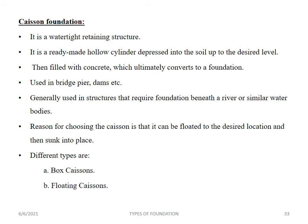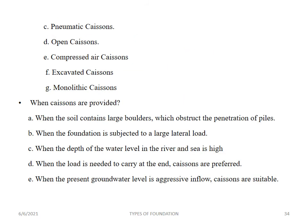Caisson foundation is a watertight retaining structure — a ready-made hollow cylinder pressed into the soil to the desired level and then filled with concrete to convert it to a foundation. It is used in bridges, dams, etc. Caissons can be floated to the required location and sunk into place. Different types are box caissons, floating caissons, pneumatic caissons, open caissons, compressed air caissons, excavated caissons, and monolithic caissons. Caissons are provided when the soil contains large boulders, when foundations are subjected to large lateral loads, when depth of water in a river or sea is high, or when groundwater flow is aggressive.